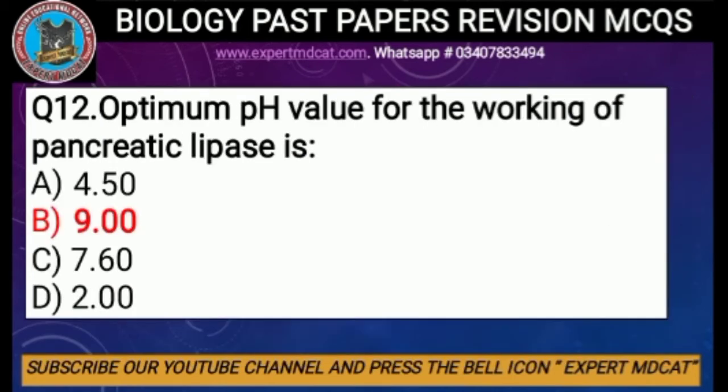Question number twelve: the optimum pH value for the working of pancreatic lipase is. Pancreatic lipase plays a role in fat digestion and works in a highly basic solution, which is why its optimum pH is 9. The correct option is B, pH 9.